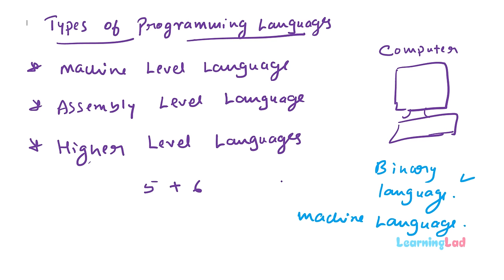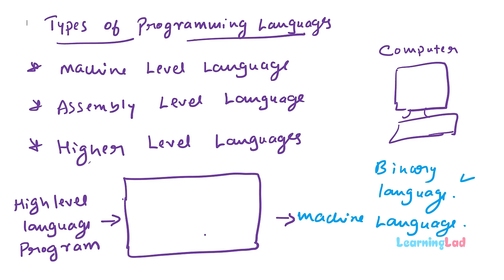Programs written in a higher level language cannot be directly executed on a computer, because the computer can only understand machine language containing 0s and 1s. So we have to convert the higher level language program to machine language. There are two ways to convert source code from a higher level language to machine level language and execute it.